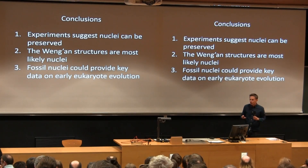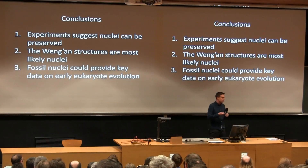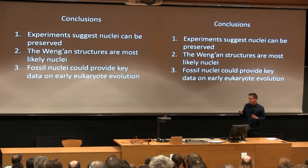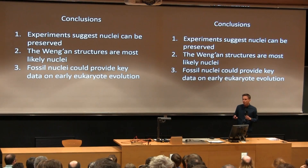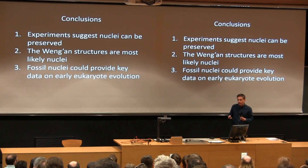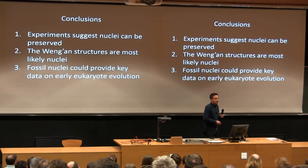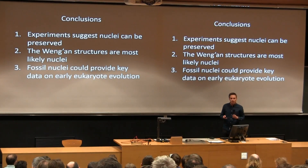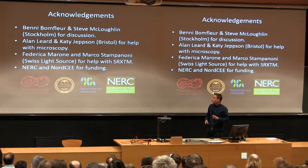But deeper into the Precambrian, a record of fossilised nuclei could have profound implications. There have been many reports of nuclei from older deposits, but they've been rightly criticised because they're inadequately supported and fail to reject the pseudonucleus interpretation. Perhaps in the light of a plausible fossil record of nuclei, it may be worth revisiting these sites and critically evaluating these structures, because a record of nuclei or of other organelles from this time could provide really key data about the early evolution of eukaryotes.